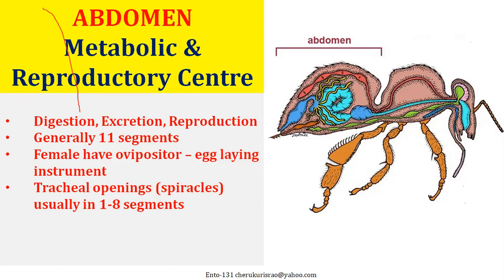The abdominal region also has an egg-laying instrument called the ovipositor, an egg-laying appendage found at the last segment. The abdomen also has respiratory openings called tracheal openings, which are also called spiracles.